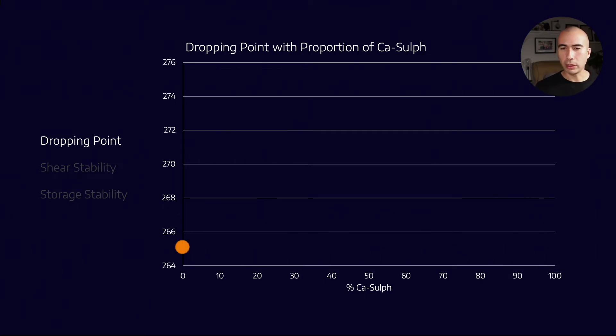And the dropping point for the lithium complex grease was 265 degrees Celsius, and the dropping point for the calcium sulfonate grease was 275.